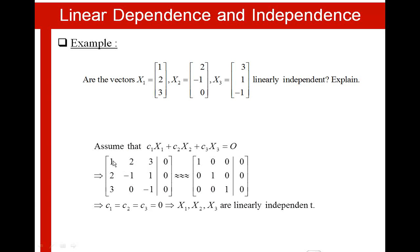If we multiply these scalar values by the values of the vectors, we will have a system of equations, for which we can create the corresponding augmented matrix. Then we do row reduction to obtain the reduced matrix, which shows that C1 equals 0, C2 equals 0, and C3 equals 0. Therefore X1, X2 and X3 are linearly independent vectors.